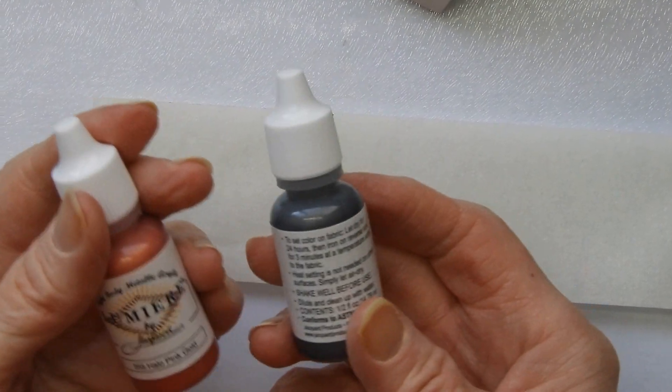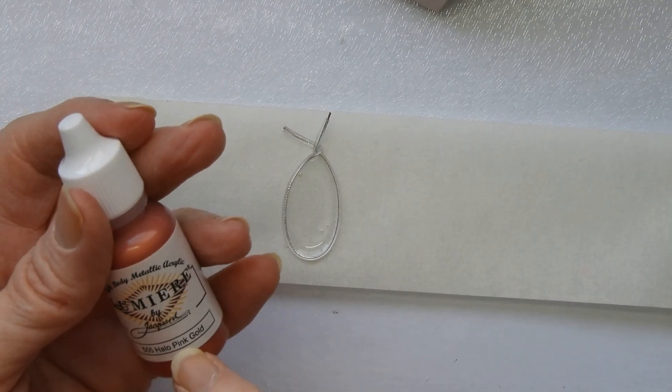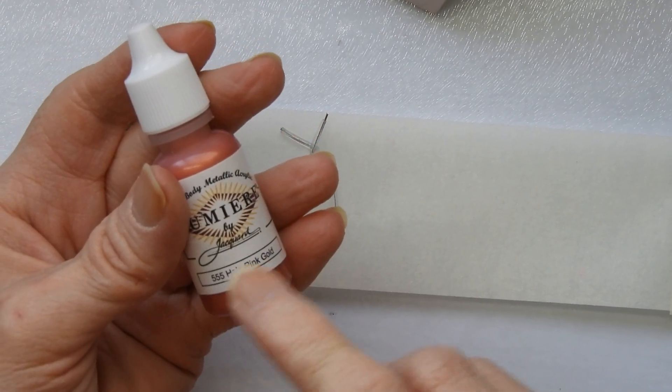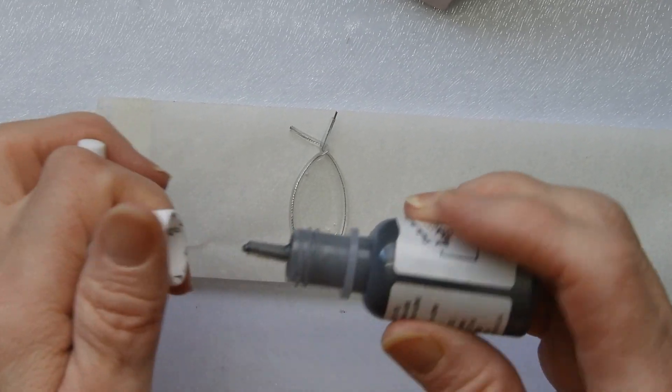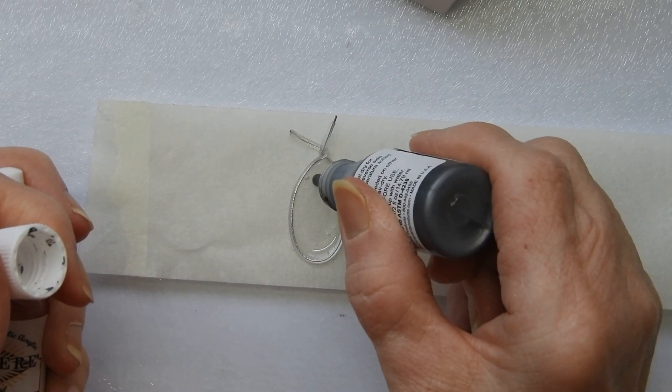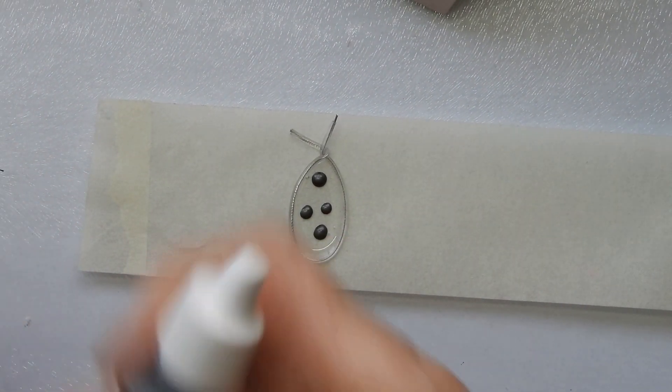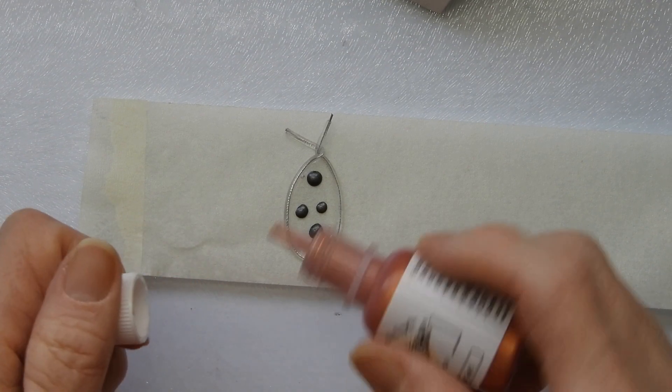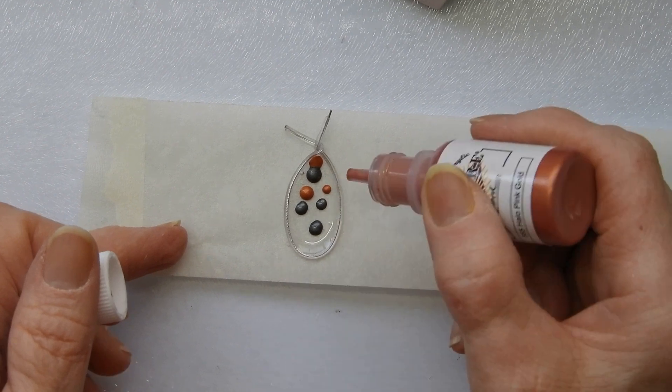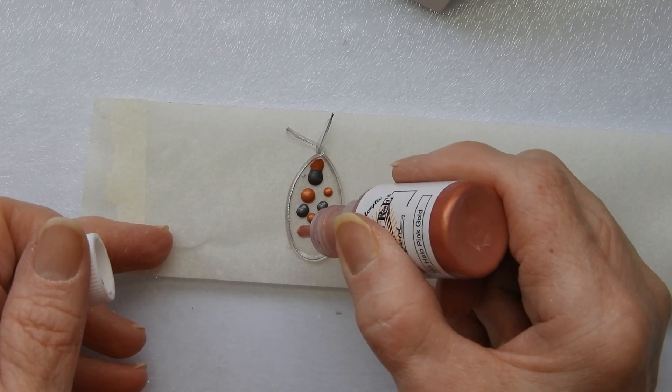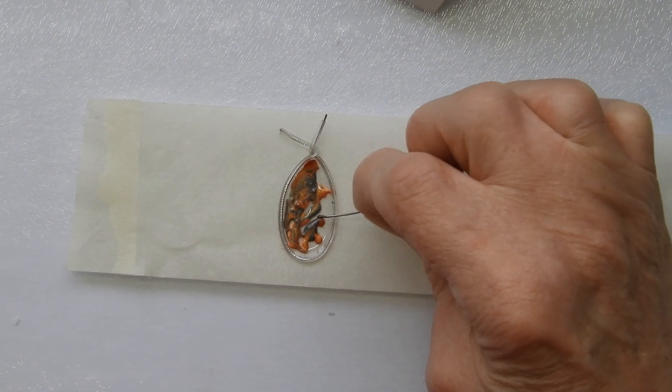For this one, I'm going to use a couple of Lumiere paints by Jacquard. This one is Pewter, and this is Halo Pink Gold. So this is kind of like a color shifting one. This is the Pewter. I've not tried this on here before, so I'm going to have a bit of fun with it. And add some of this one to put the paint over the surface.